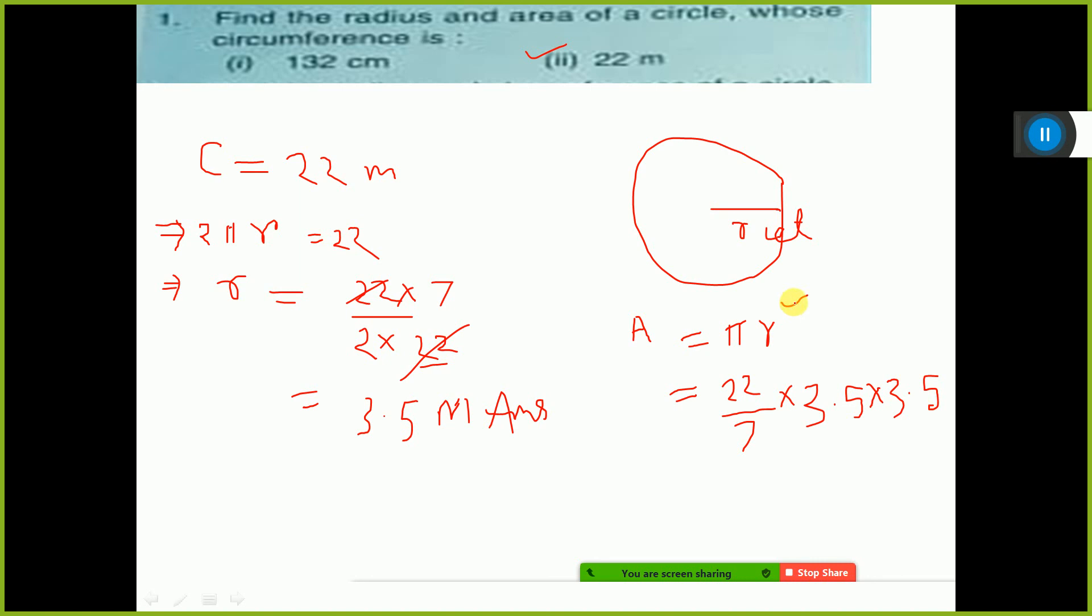r square given, so r into r, 2 times. If you do cancellation, 0.5 it will be. Now multiply 0.5 into 22.